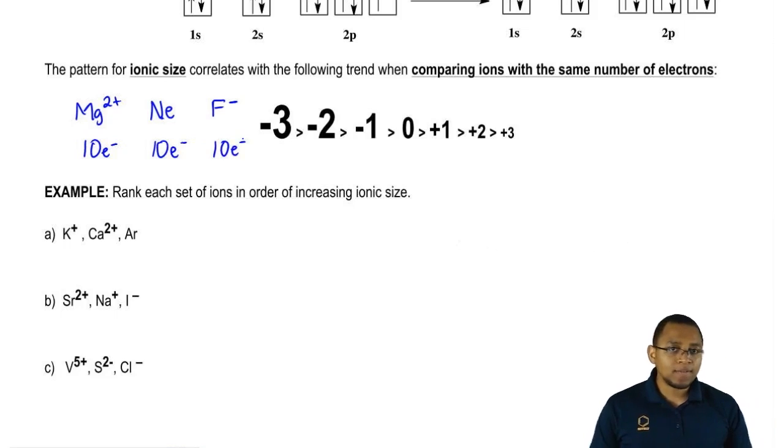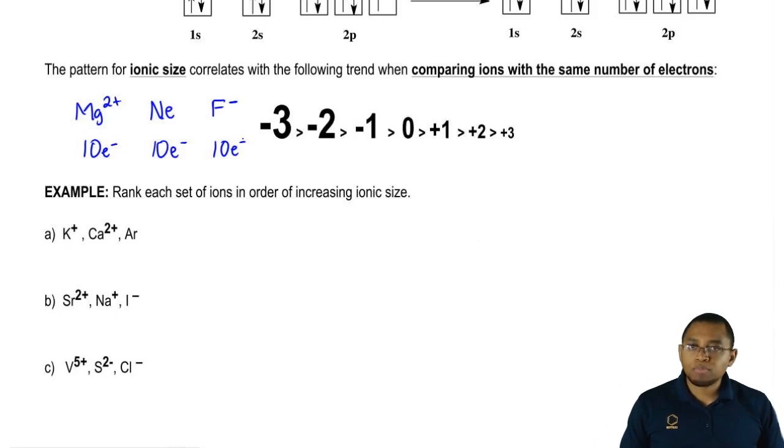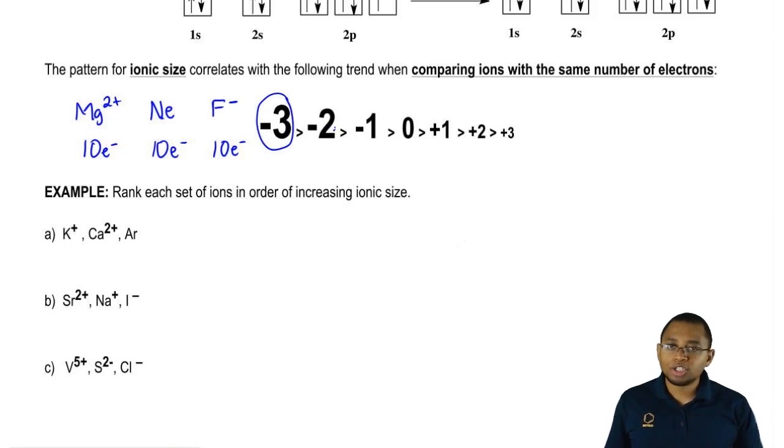When they have the same number of electrons, we use this pattern to break the tie because they all can't be the same size. Someone has to be bigger than someone else. When they all have the same number of electrons, we're going to say minus 3 charge would mean it's bigger than minus 2 charge, then minus 1, all the way down to plus 3.